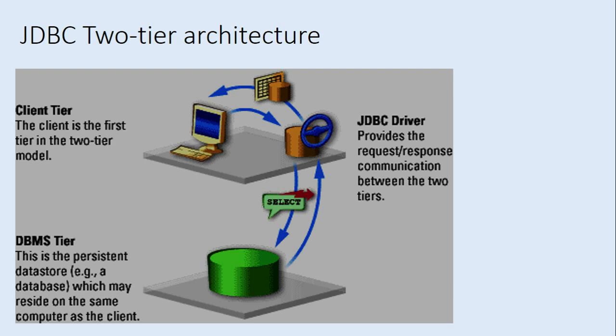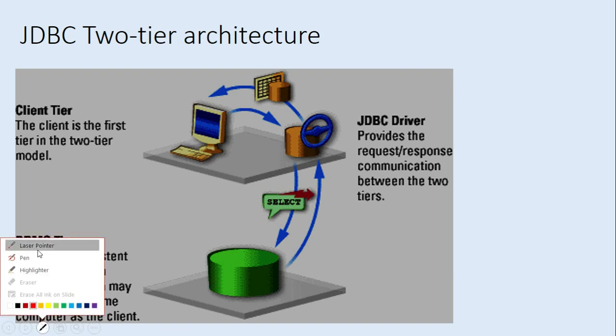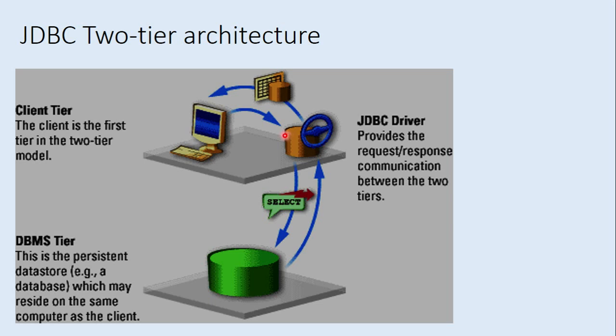If you think of this as two levels, the first level is the client tier and the second level is the database management system. The first layer has the client as well as the JDBC driver. The client interacts with the database through the JDBC driver. When the database receives the query or commands from the client, it processes the commands and sends back the result to the client tier. This is the two-tier architecture.